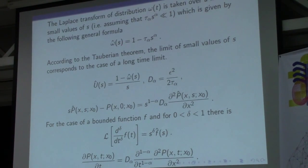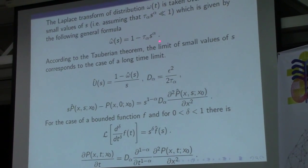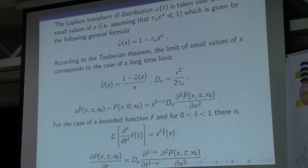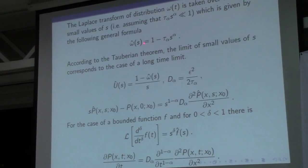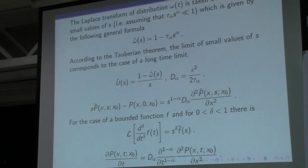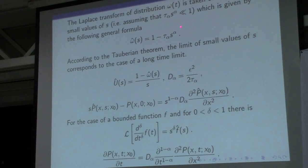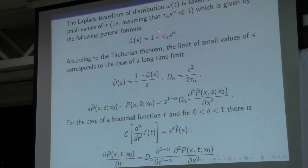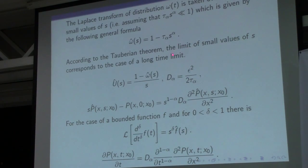In the continuous-time random walk approach, the function omega for the system without reactions is usually assumed as follows. This is the limit of the Laplace transform of omega for small s, which corresponds to long time. The parameter alpha for sub-diffusion is assumed to be smaller than one; alpha equals one corresponds to normal diffusion.